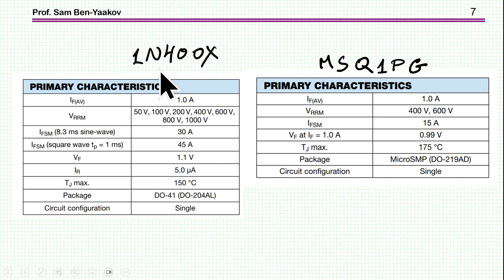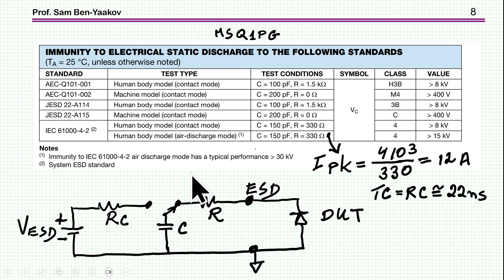On the other hand, the 4000 family is also here 1 amp, but you see that in this case for 8.3 millisecond sine wave, it can hold 30 amp. This is only 15 amp, and this is a single pulse. And here for the single pulse of 1 millisecond, it could be 45 amp. So in fact, in the forward direction, this is the stronger rectifier. So the question is, what makes this particular unit ESD-capable?